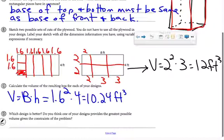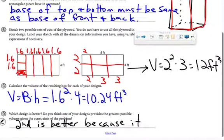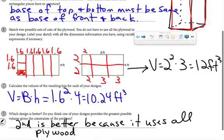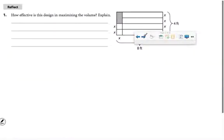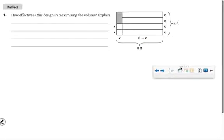So certainly, and it should just make sense, I am getting more volume when I use more of the plywood. So in part D it says which design is better, the second. And do we think that one of our designs provides the greatest possible volume? It's hard to tell. The second is better because it uses all of the plywood. But right now it's kind of hard to tell whether this is the best way to solve the problem.